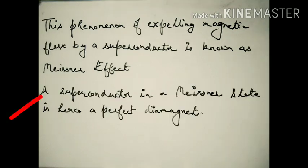This phenomenon of expelling magnetic flux by a superconductor is known as the Meissner effect. A superconductor in the Meissner state is hence a perfect diamagnet.